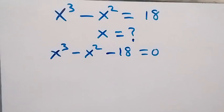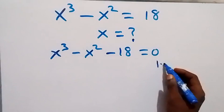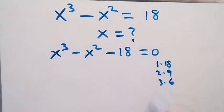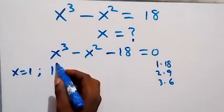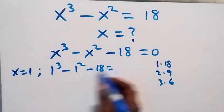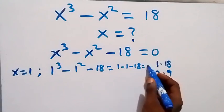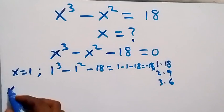We can get one of the roots of this polynomial by looking at the factors of 18. We have 1×18, 2×9, or 3×6. Let's substitute x=1 first: 1³ - 1² - 18 = 1 - 1 - 18 = -18. This is not zero, so 1 is not a root.